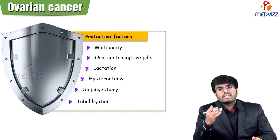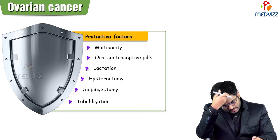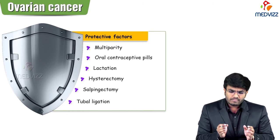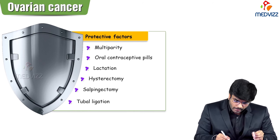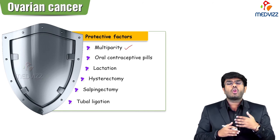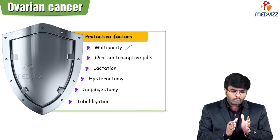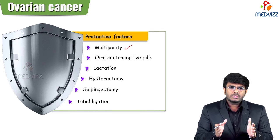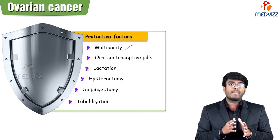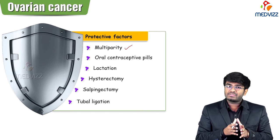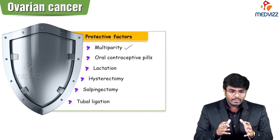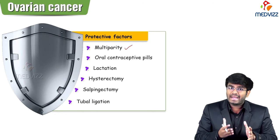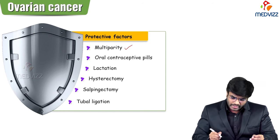Now let's discuss protective factors. Nulliparity and infertility are risk factors, but multiparity — having many children — is protective against ovarian cancer. Too many pregnancies give too many breaks from menstrual cycles, so the ovaries are not continuously under stress. They can relax, so they won't develop cancer. Multiparity is a protective factor.